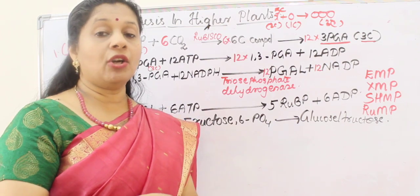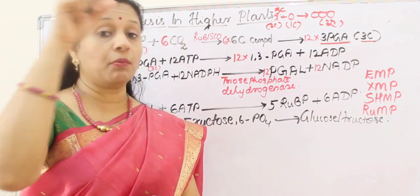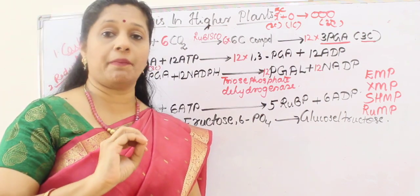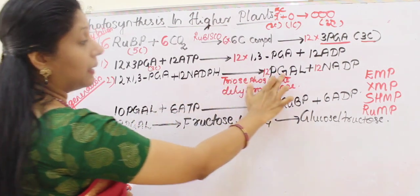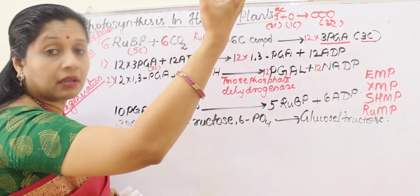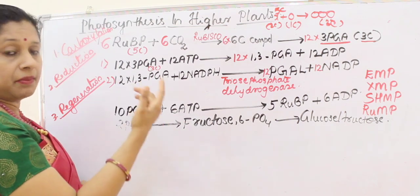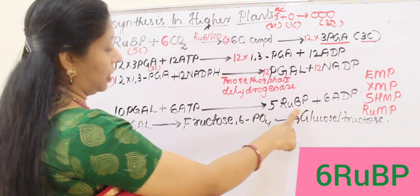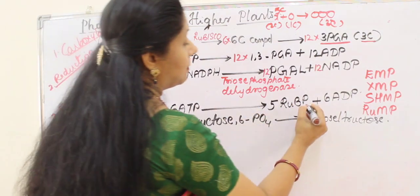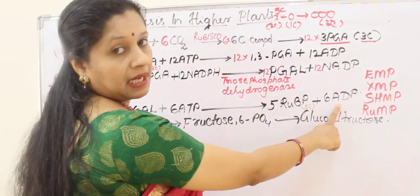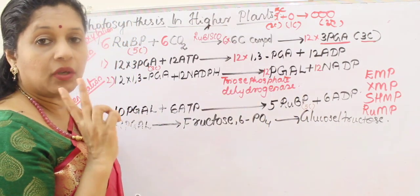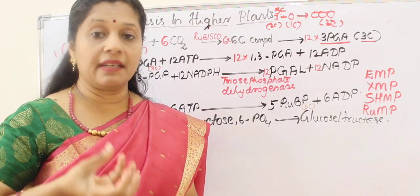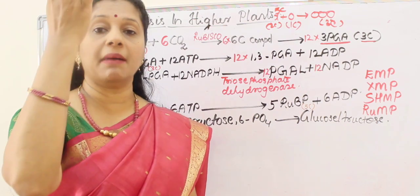We now have 12 PGAL. However, we cannot use all 12 PGAL for making carbohydrate because RUBP must be regenerated, or photosynthesis will stop. So 10 of the 12 PGAL are used to regenerate RUBP. This requires 6 more ATP molecules. The 10 PGAL combine with 6 ATP to form 6 RUBP molecules (each a 5-carbon compound), and the ATP becomes ADP. That leaves only 2 PGAL for making carbohydrate.